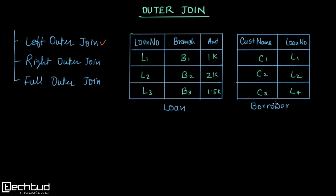In full outer join, all records from the left and all records from the right are included. For records from the right table that have no matching entry in the left table, null will be placed there. Let's understand each type one by one, starting with left outer join.